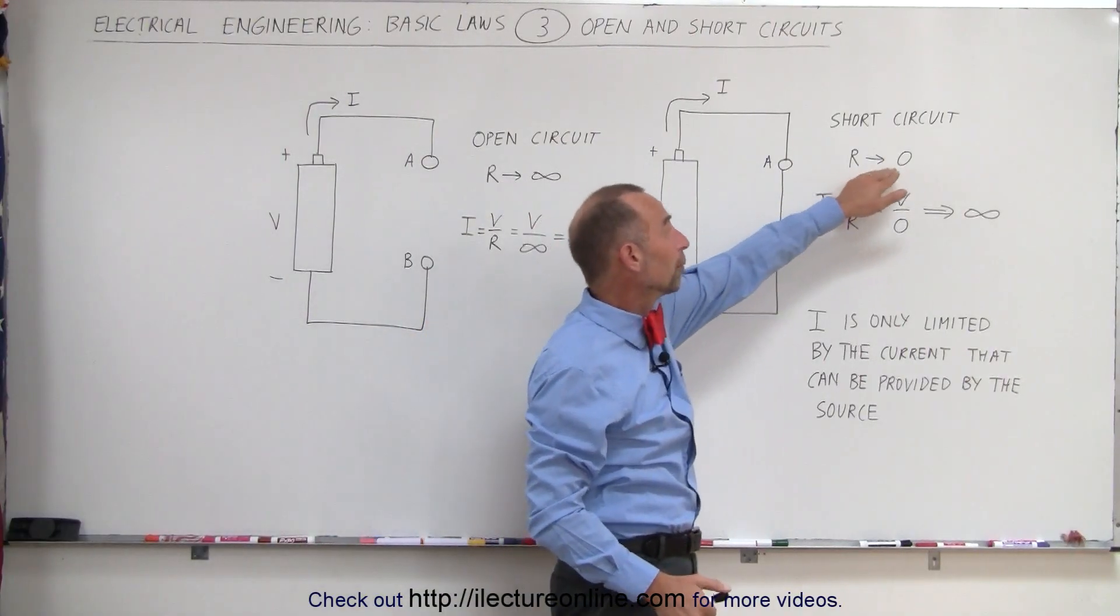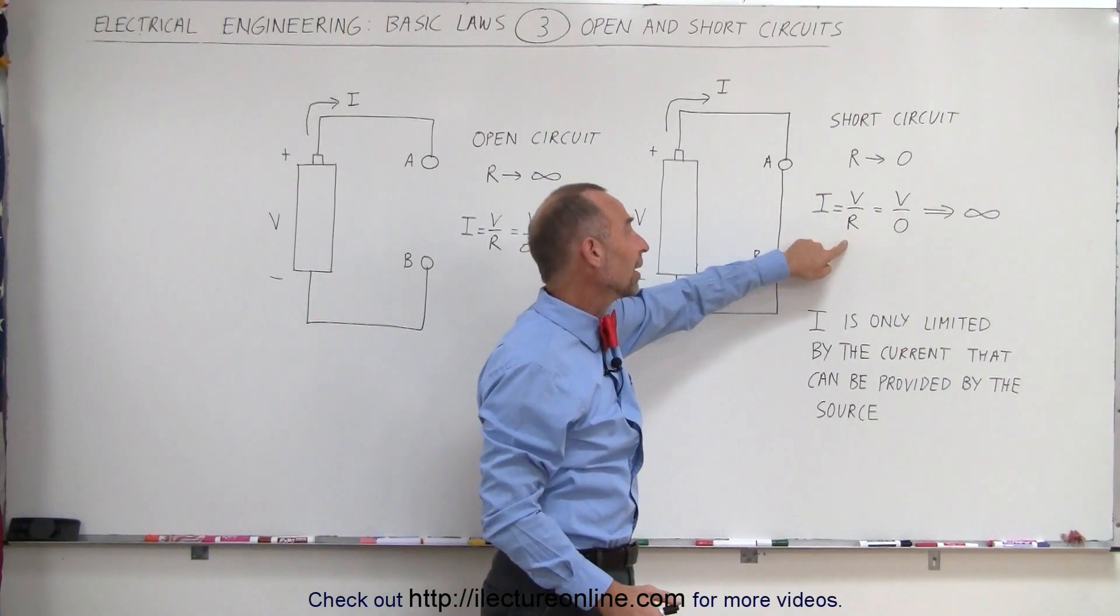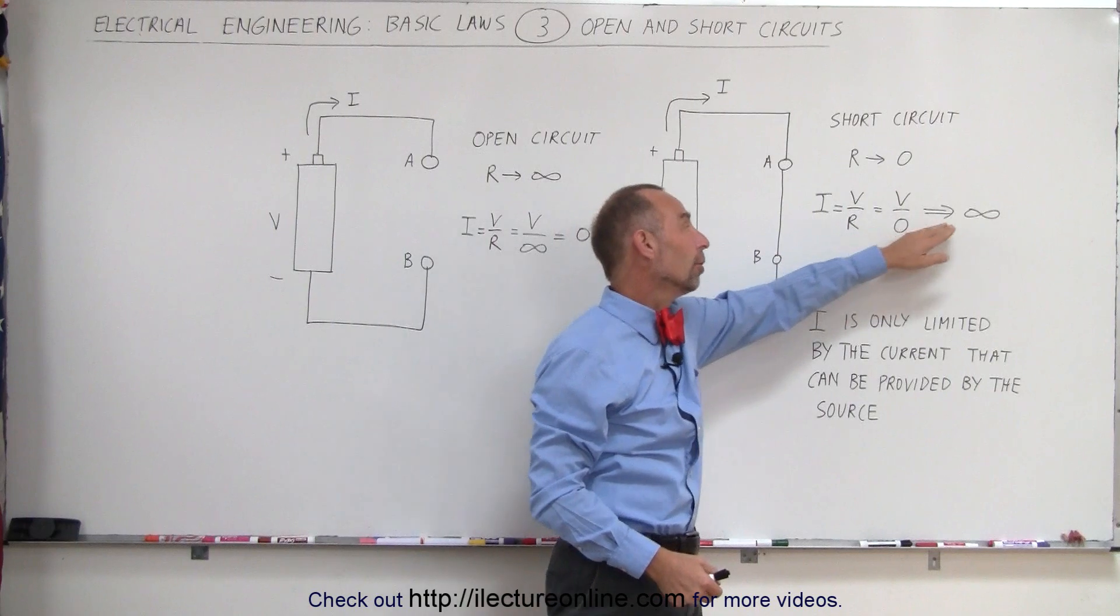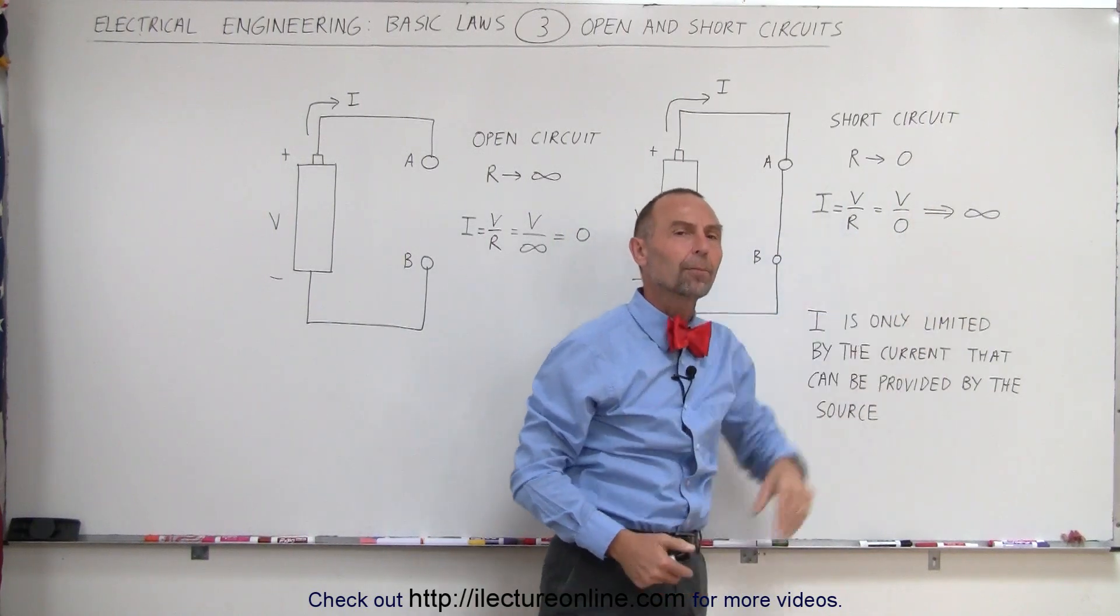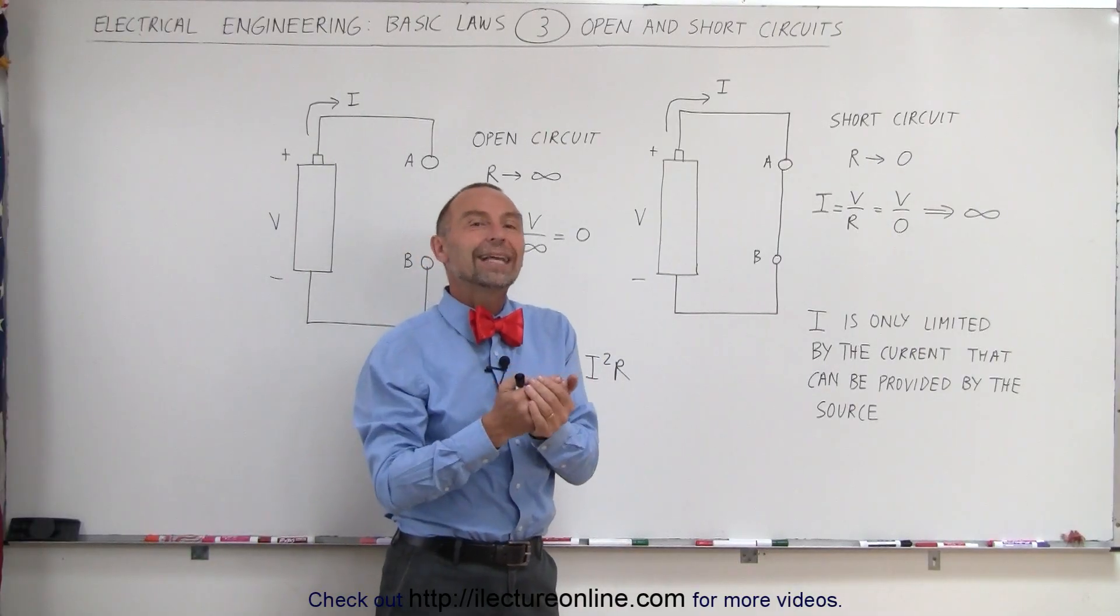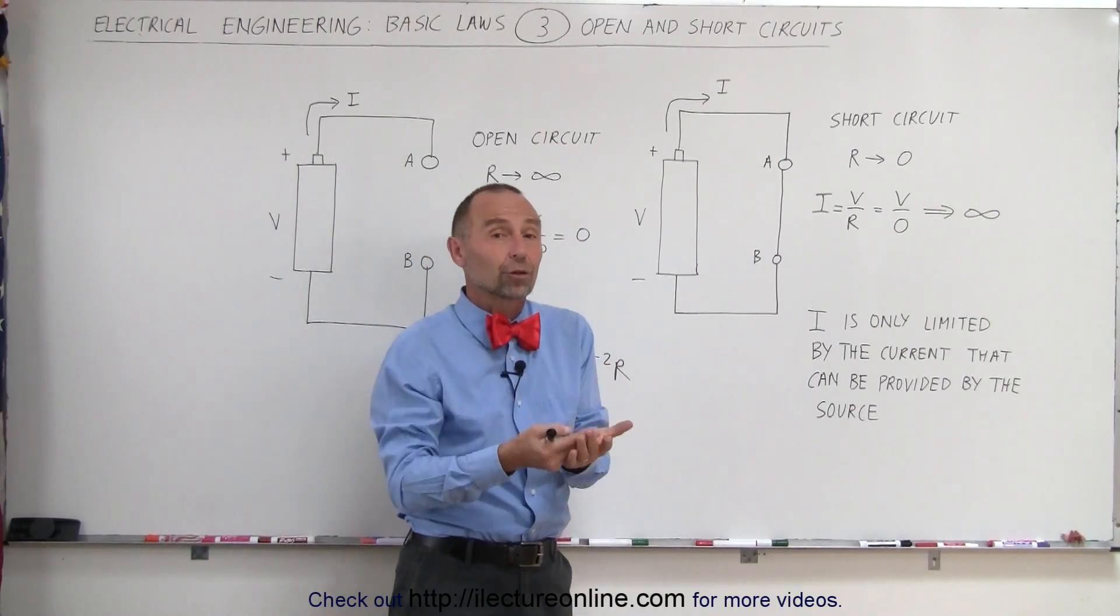As R approaches zero, using Ohm's law V/R, we replace R by zero and V divided by zero approaches infinity. Now, of course, we can't have infinite current. There's no way any voltage source could provide infinite current.